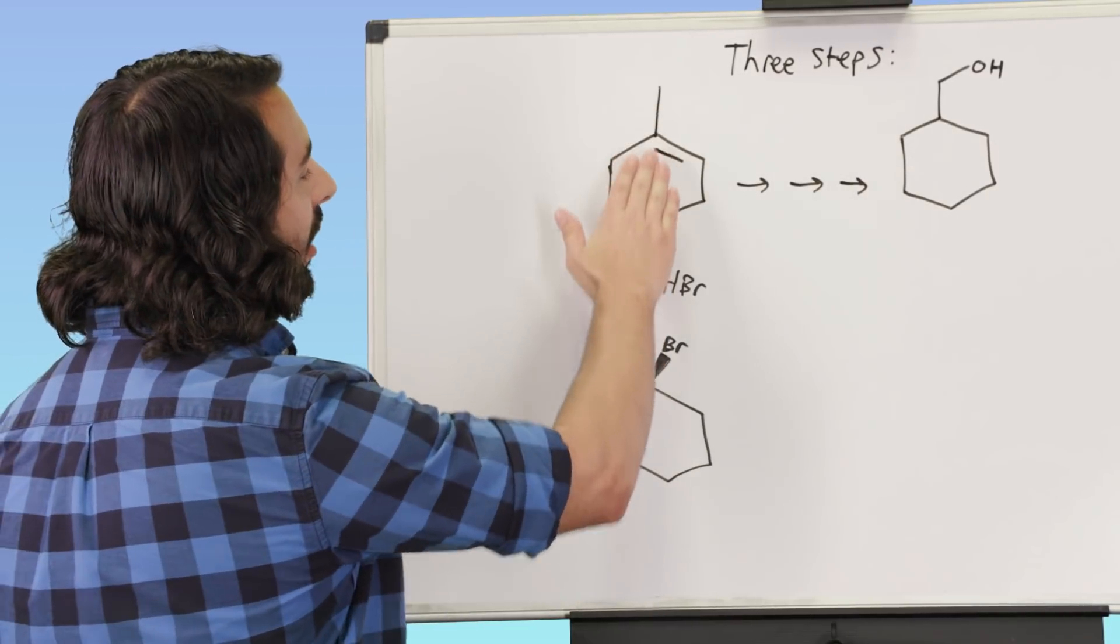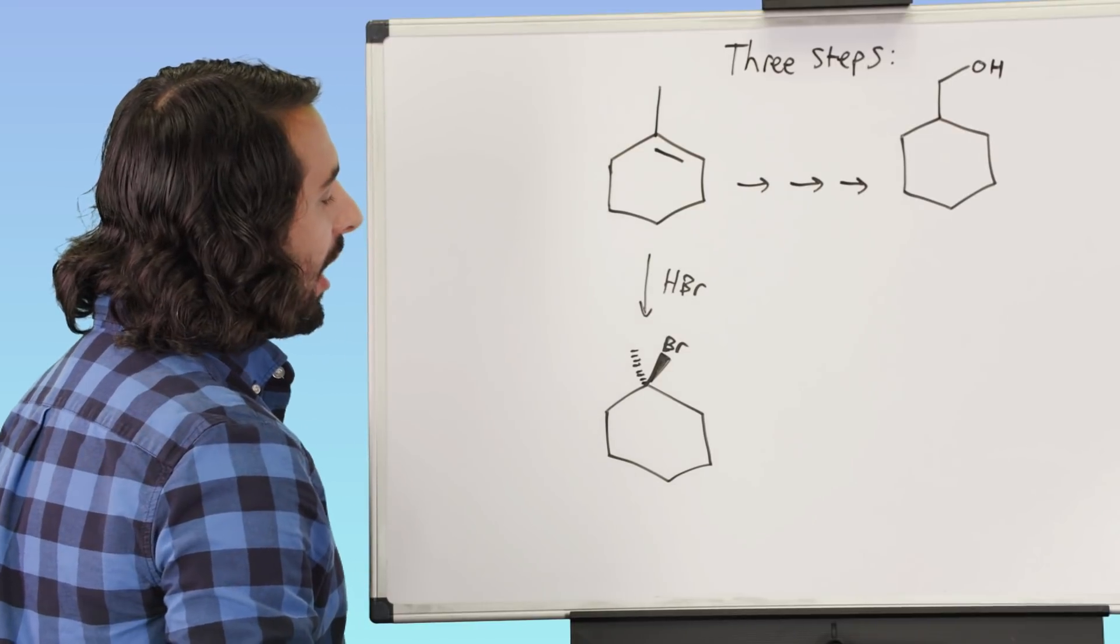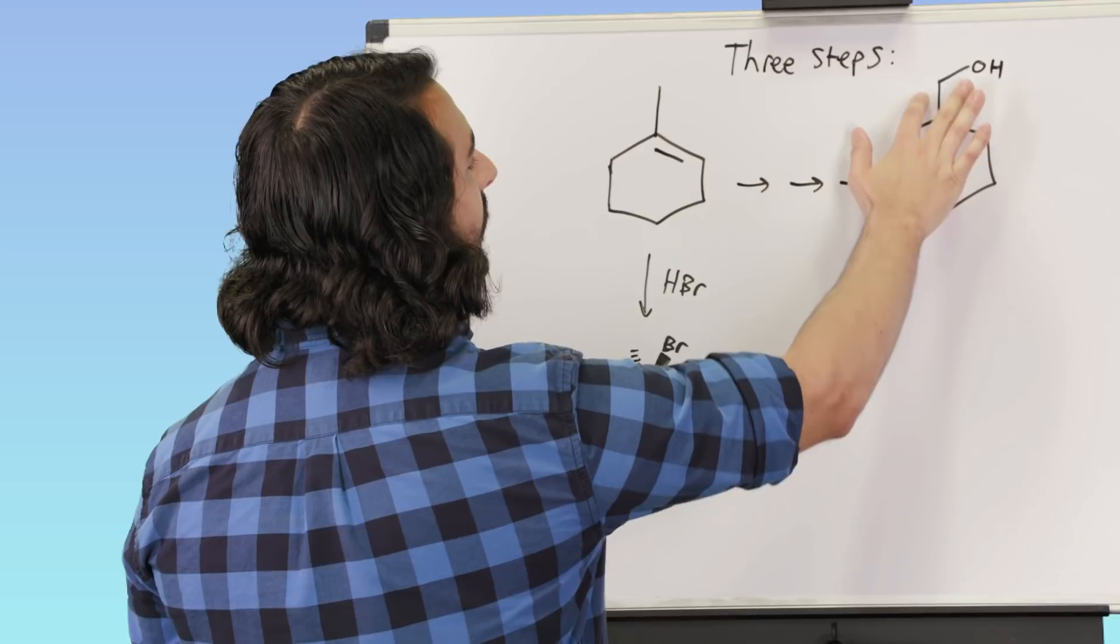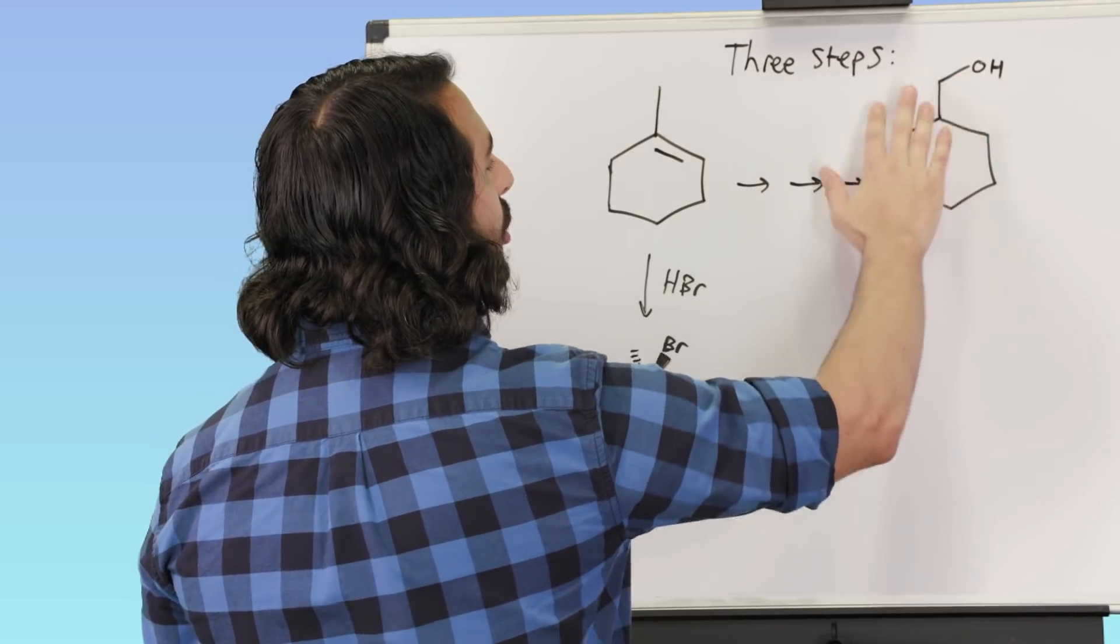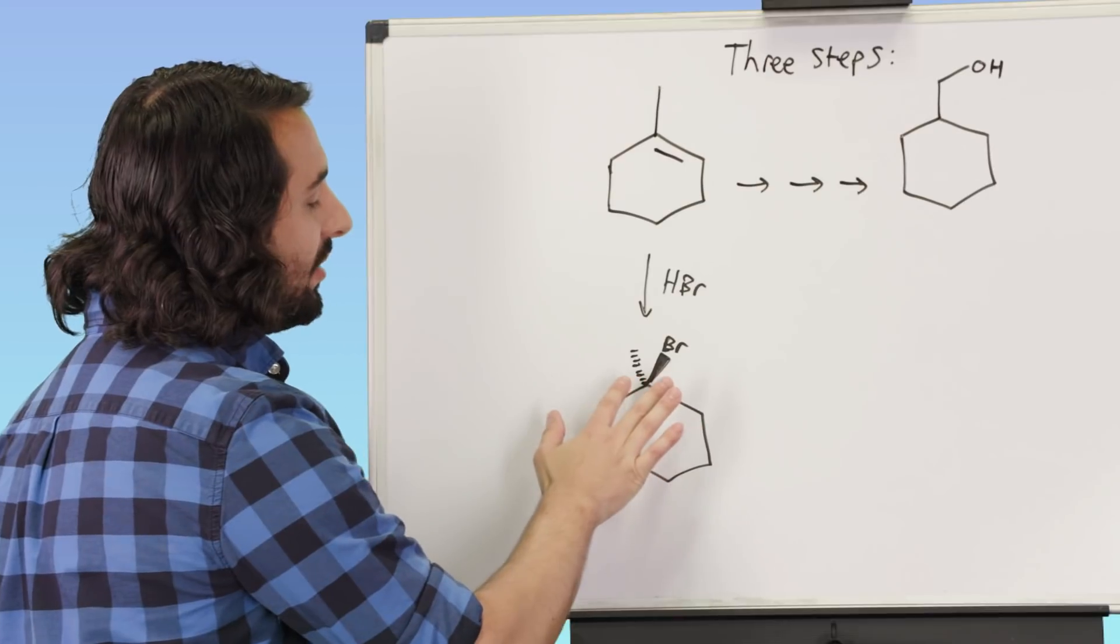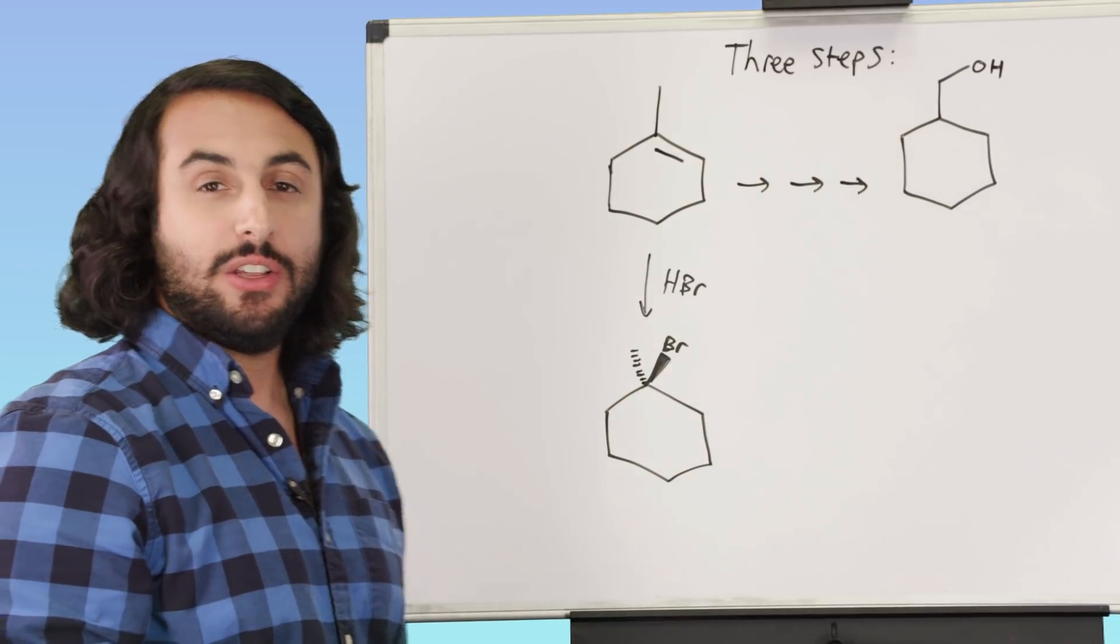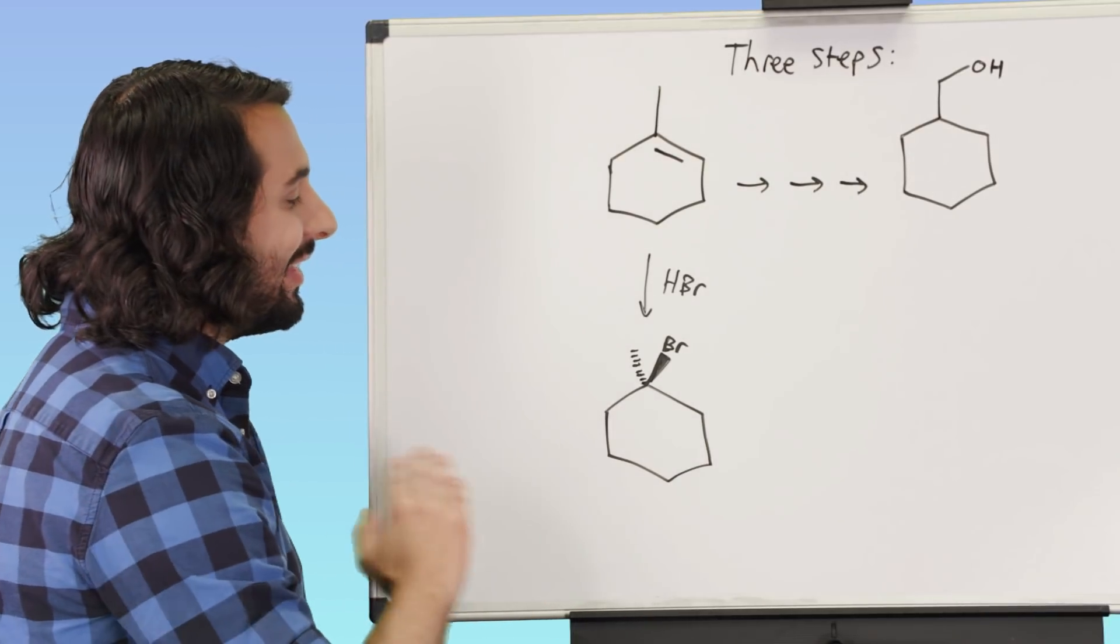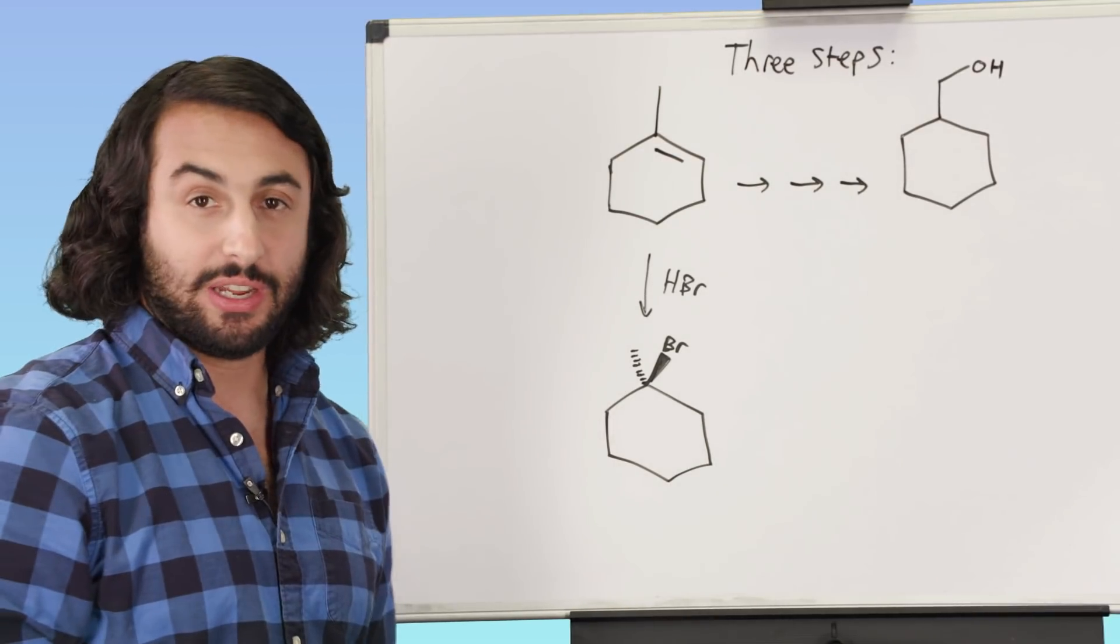So we've done our hydrohalogenation, and now what do we want to do? We're looking over here, we've identified that maybe if we get pi bond functionality there, we're going to be able to do some kind of hydration, but how are we going to do that? We want to get a pi bond, so clearly we're going to do some kind of elimination.